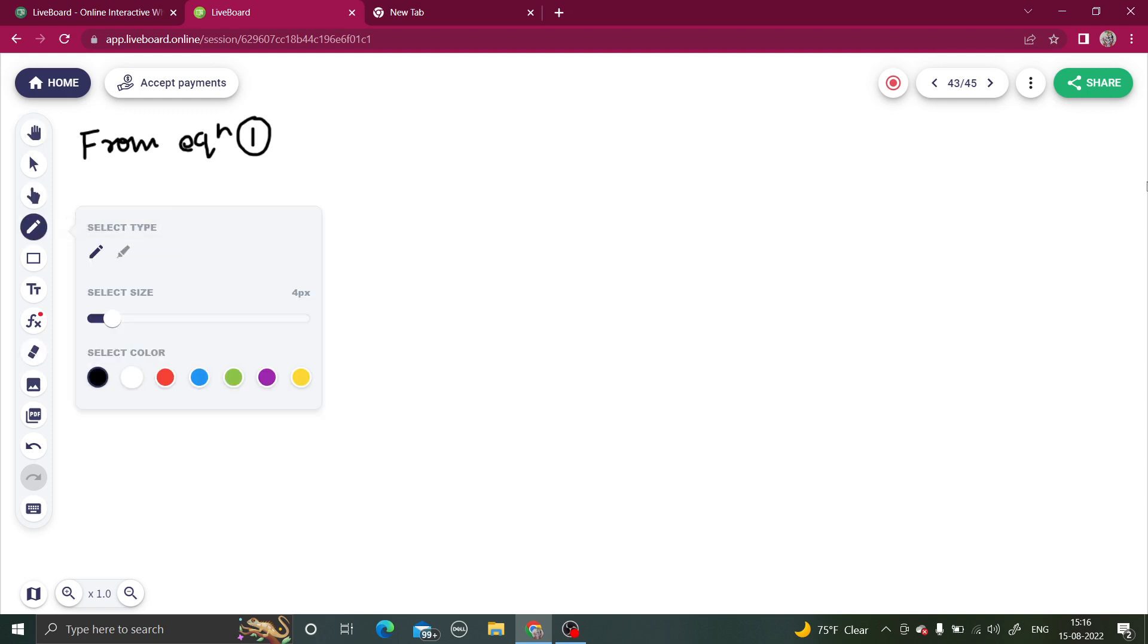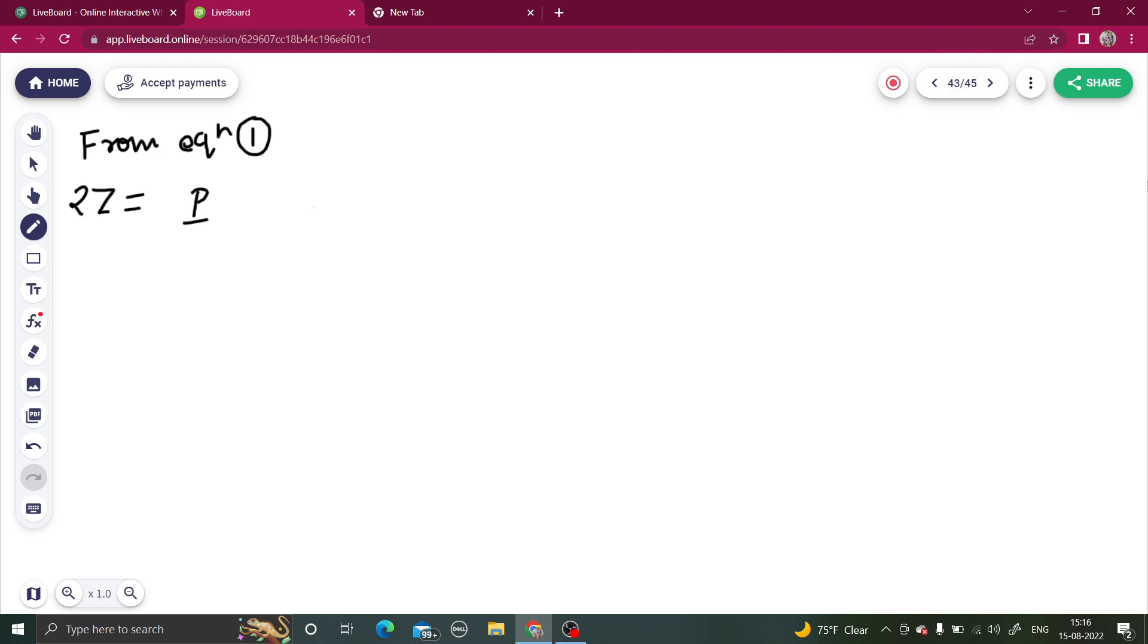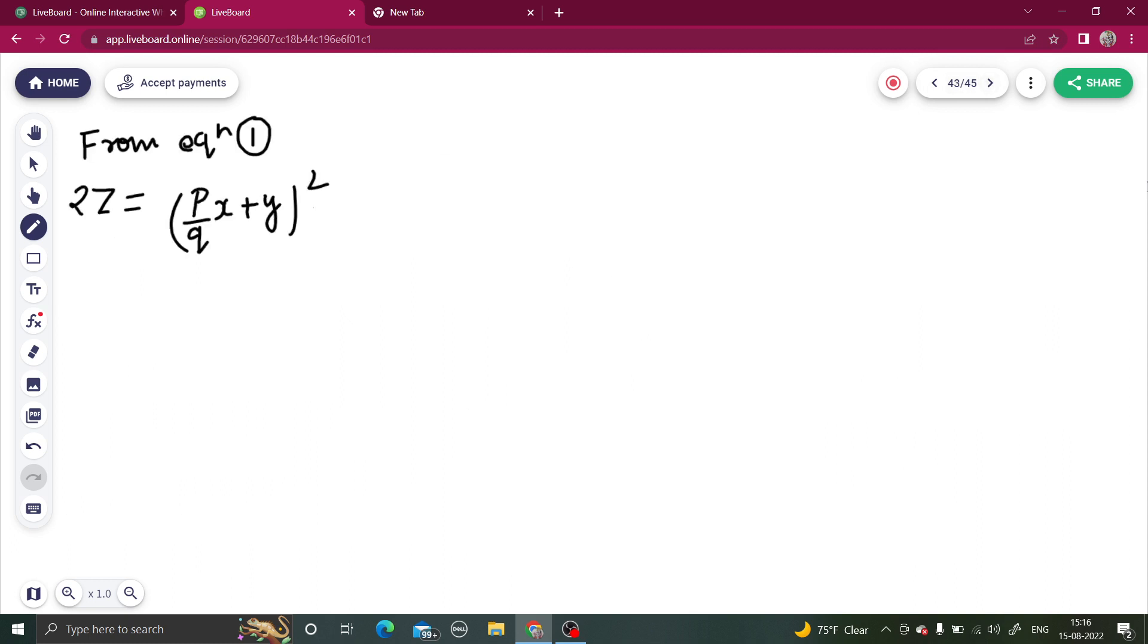From equation number one, LHS is going to remain as it is, which is 2z equals to, now we have a times x, so a is p by q, so p by q times x plus y whole square. And in place of b, you can put 2z minus q square. Now 2z again gets cancelled, you can send this q square to the other side.